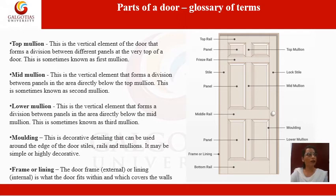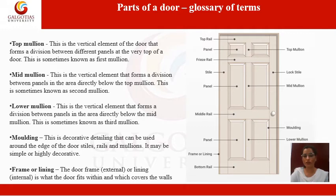The molding is used for decorative purposes on both the exterior and interior of the door. The frame or lining — external frame or internal lining — is what the door fits within and which covers the wall.